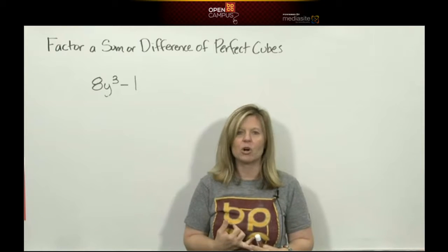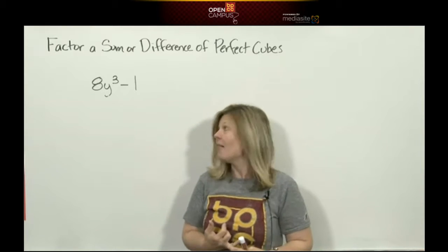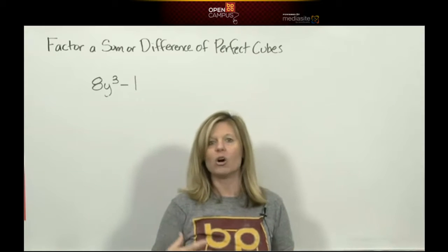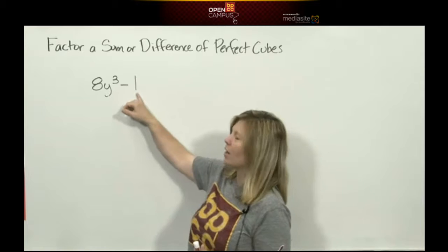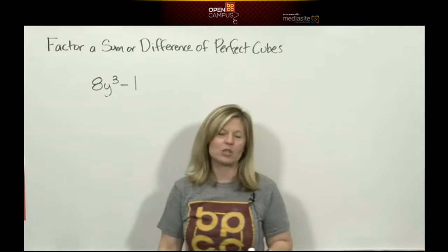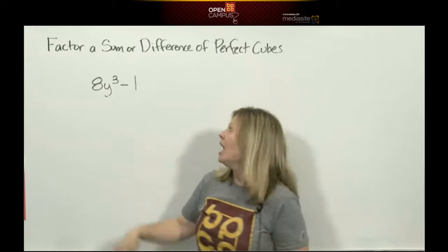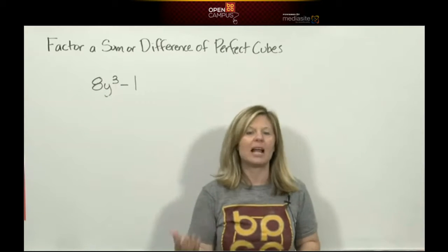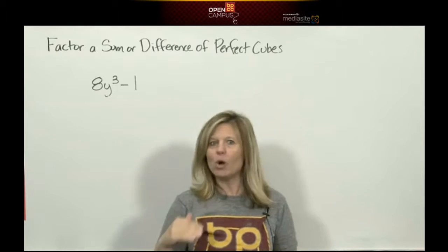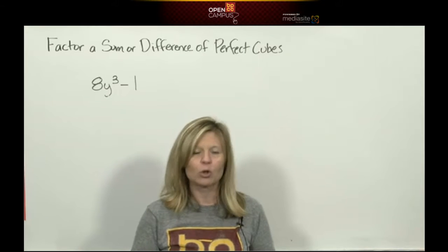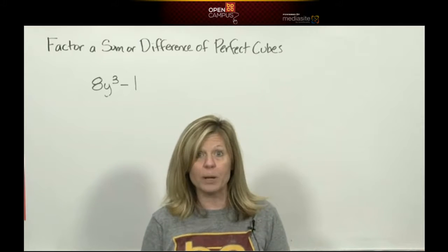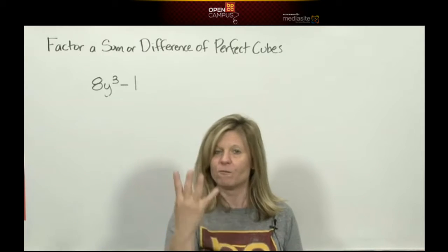So then I would go to my second rule which is called difference of perfect squares. I'd see the difference sign here and I would say are all these terms perfect squares? Well I know 1 is a perfect square. It's 1 times 1. But 8 is not a perfect square. You cannot multiply the same number to make 8. Nor is y cubed because it has an odd exponent. So the rule difference of perfect squares is out. I wouldn't even look at the trinomial rule because the word trinomial means 3 terms. So that's out. I wouldn't look at the grouping rule because grouping means you need 4 terms.